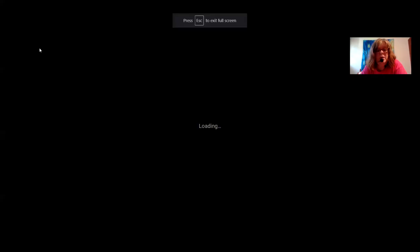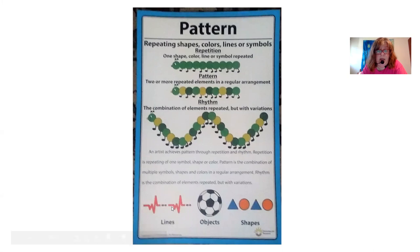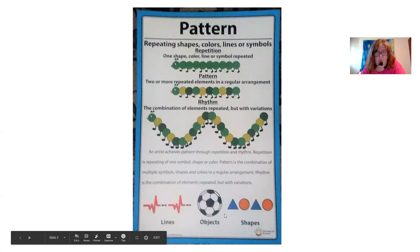Pattern can be a repetition of a shape, color, line, or symbol that's repeated. Lines can be repeated — you saw that in your own artwork; you created patterns last week. Objects like a soccer ball have a pattern on them. You can repeat a shape like triangle, circle, triangle, circle.